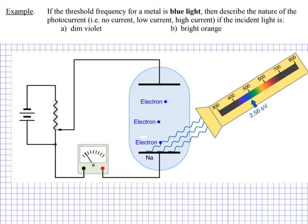Over here we would later talk about applying a voltage that we could vary, which would stop these electrons from moving. This first example is asking qualitatively: if the threshold frequency — in other words the wavelength or the energy of this light — for a metal is blue light, describe the nature of the photocurrent. Photocurrent refers to the current, the movement of the electrons, as a direct result of the photoelectric effect. We're going to say whether there's no current, a low current, or a high current.